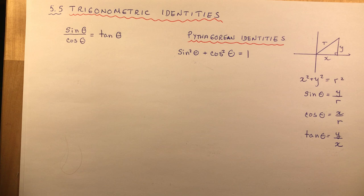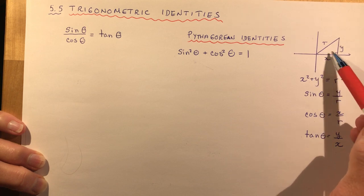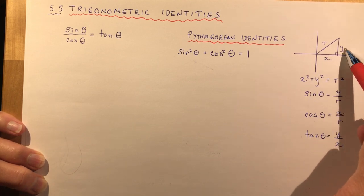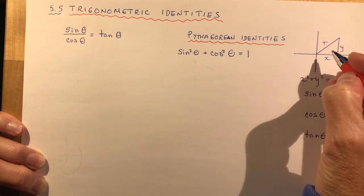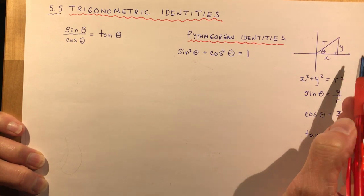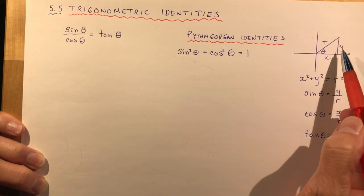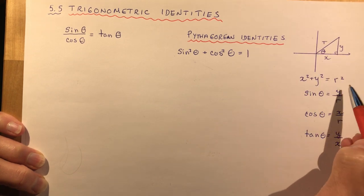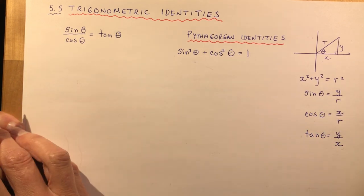We're going to start with the basic building tools, which are the Pythagorean relationship with X, Y, and R drawn on the right side, and the trig relationships we've already talked about. If this angle is theta, sine is Y over R, cos is X over R, and tan is Y over X. We'll use these building blocks to prove a couple of identities to begin with.